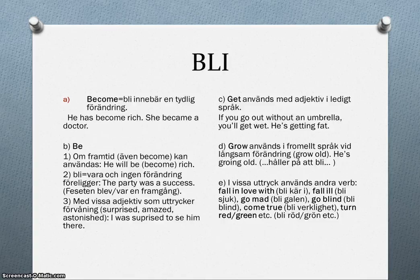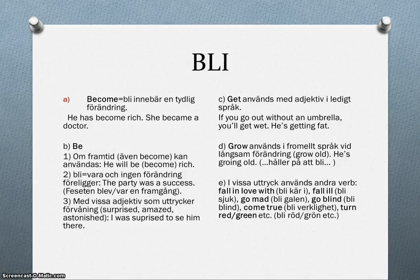The last Swedish verb is 'bli', which also has five different translations in English. You use 'become' when you talk about a clear change — for example, 'he has become rich', which was different from what he was before, or 'she became a doctor' — she wasn't one before, but now she is. You use the verb 'be' in different ways when you talk about the future; you could also use 'become' here: 'he will be rich' or 'he will become rich.'